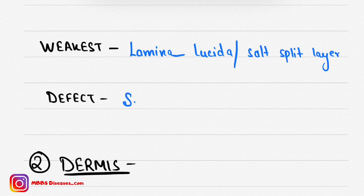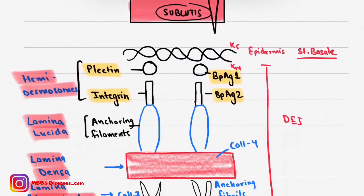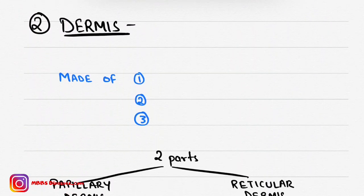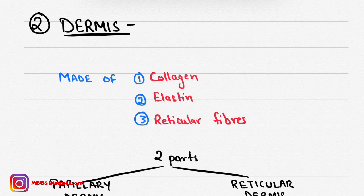Defects in any of the above proteins lead to sub-epidermal disorders, which will be discussed in another video. Now, moving to the dermis: the dermis is made up of three things — collagen, elastin, and reticular fibers.